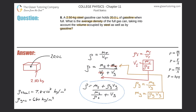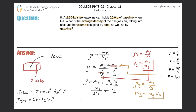So the overall density equals: mass of steel, which is 2.5, plus density of gas, which is 680, times volume of gas. But wait — one important thing to check: what are the units for my density of gas? It's kilograms per cubic meter. And what are the units for volume? It's in liters. Liters and cubic meters are definitely not the same, so we have to take that into account.